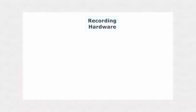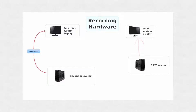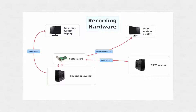In my recording hardware setup, I have a recording system with its display and a DAW system with its display. The video card installed in the recording system connects directly to the recording system display. Normally the video card in the DAW system would connect directly to the DAW system display, but with the addition of the capture card to the recording system, the video signal from the DAW system is redirected to the DVI input of the capture card, then unchanged out the bypass port to the DAW system display. This enables the capture card to process and encode the video signal on the recording system. Attached to the DAW system is the GINA 3G audio interface used for microphone input.